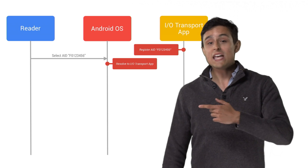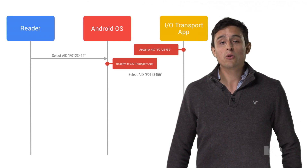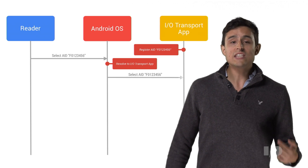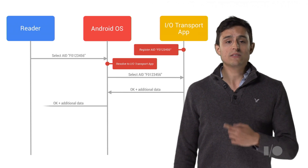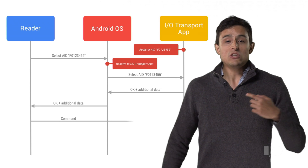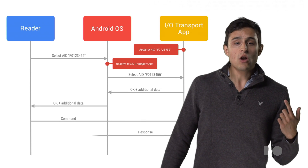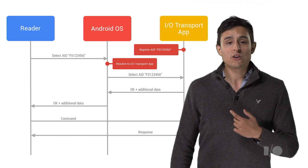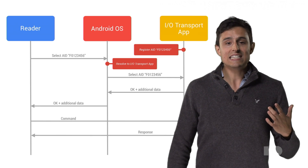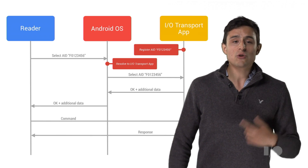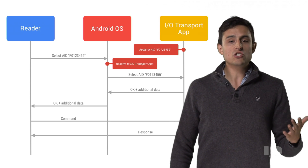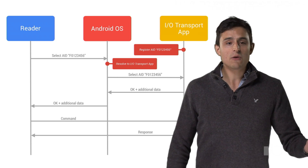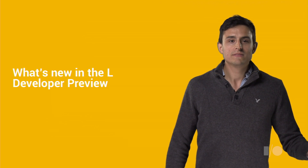Our IOTransport app, for example, registers the AIDs it's interested in with the Android runtime. When you tap your phone on the transport reader, it selects that AID, and the IOTransport app gets invoked automatically. It's then free to exchange arbitrary data with the reader.